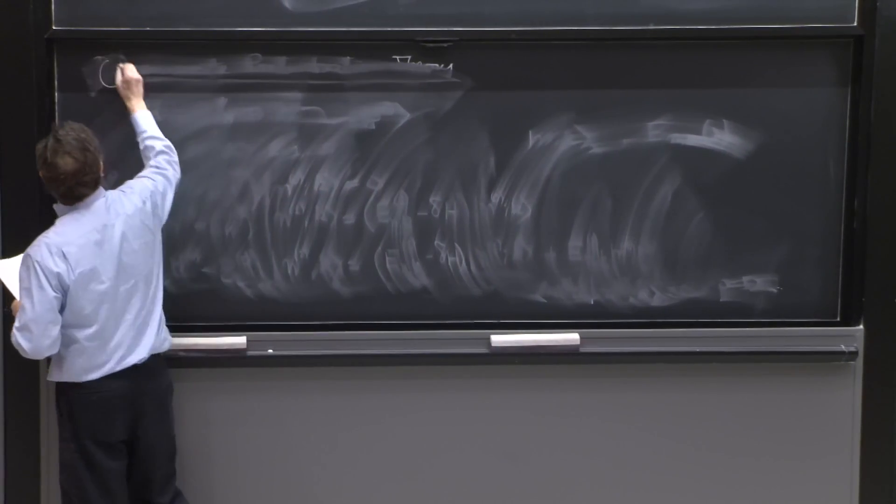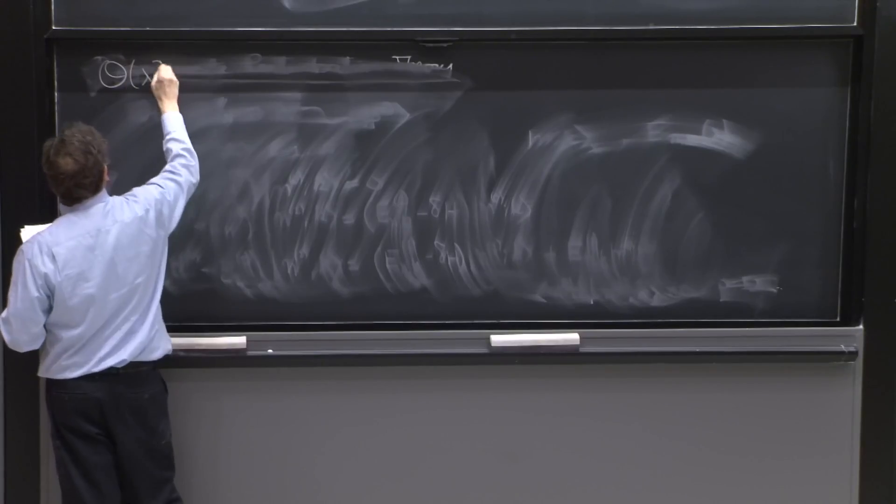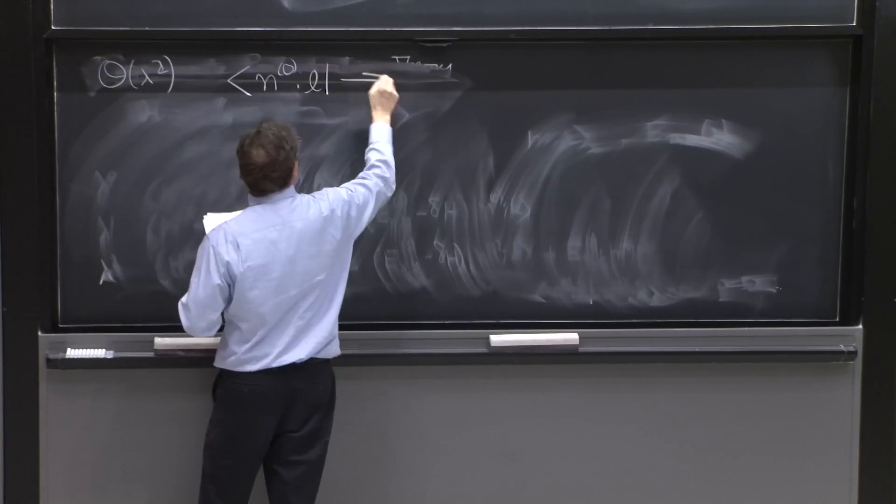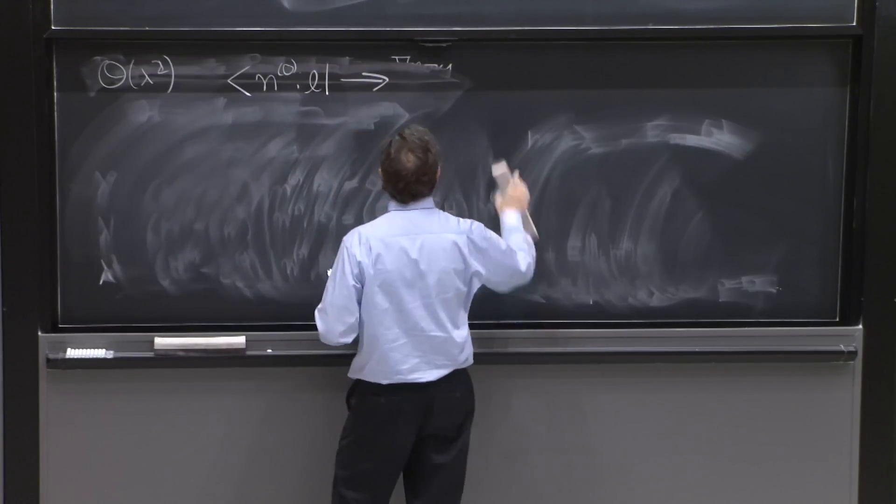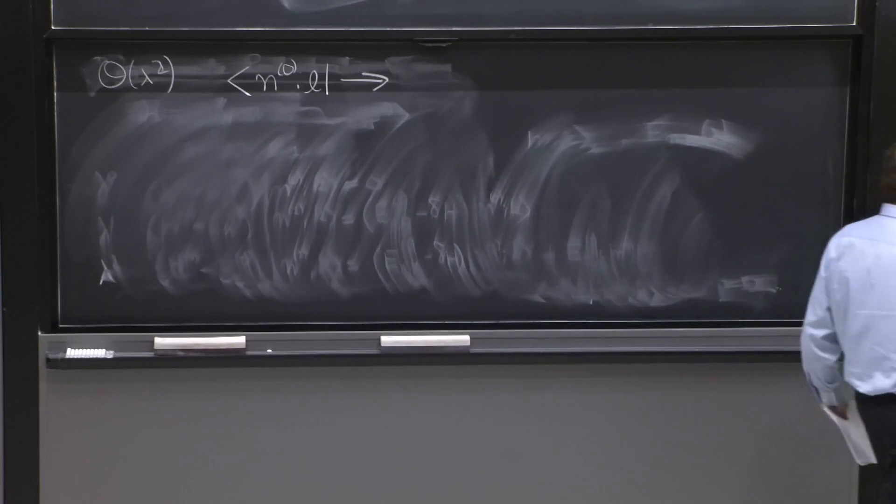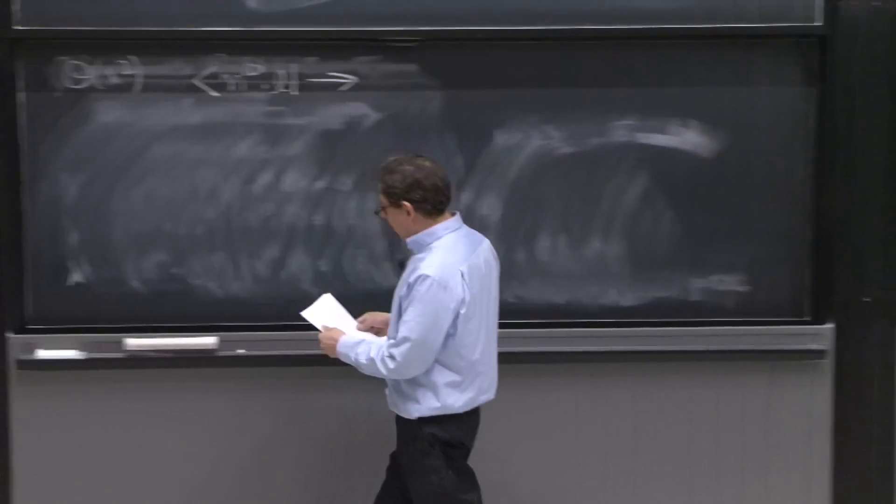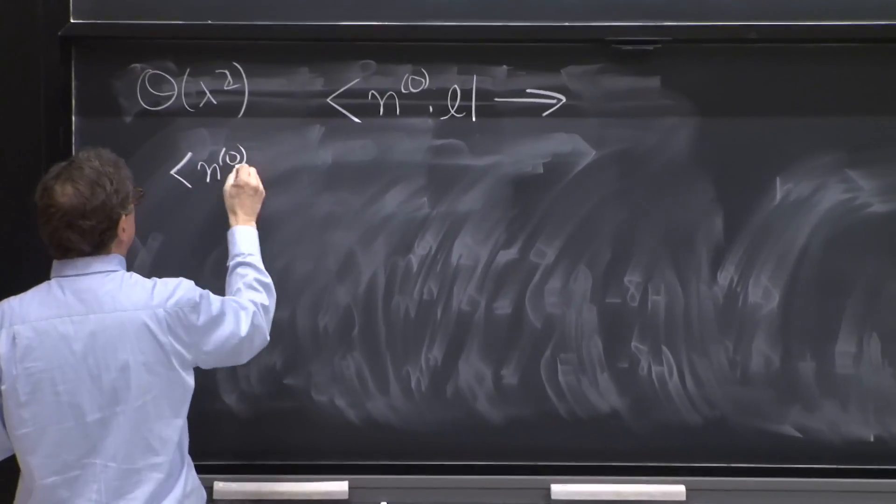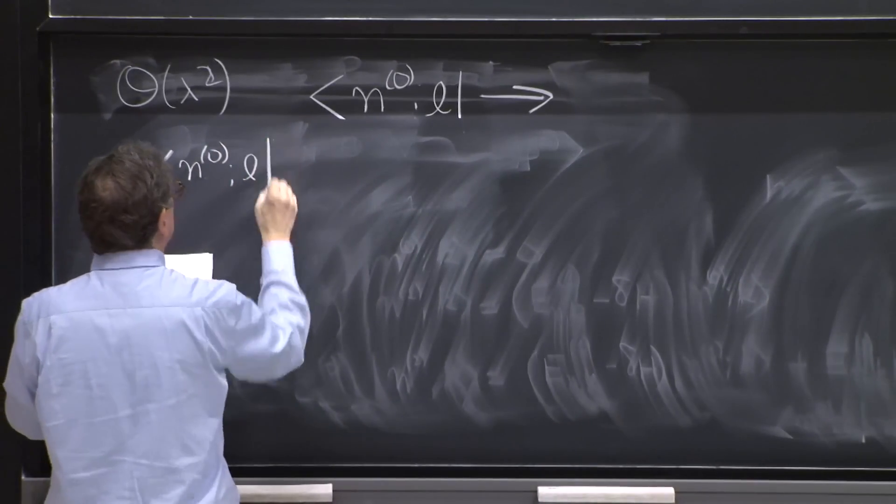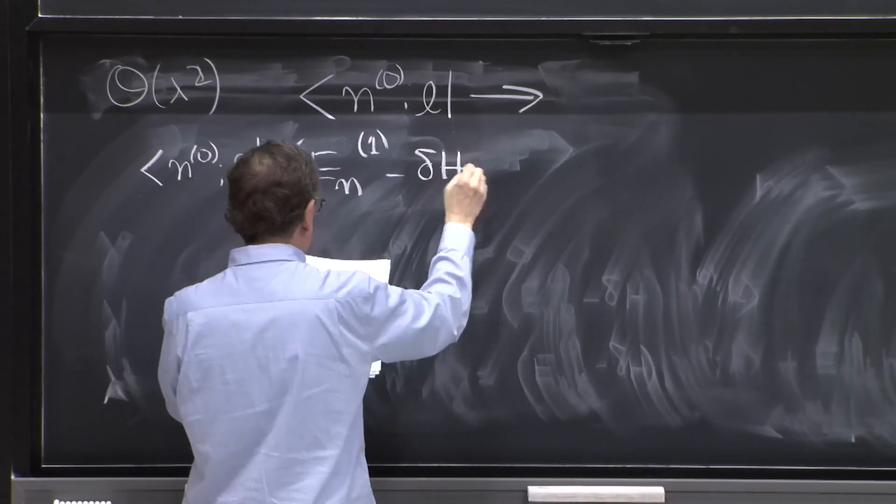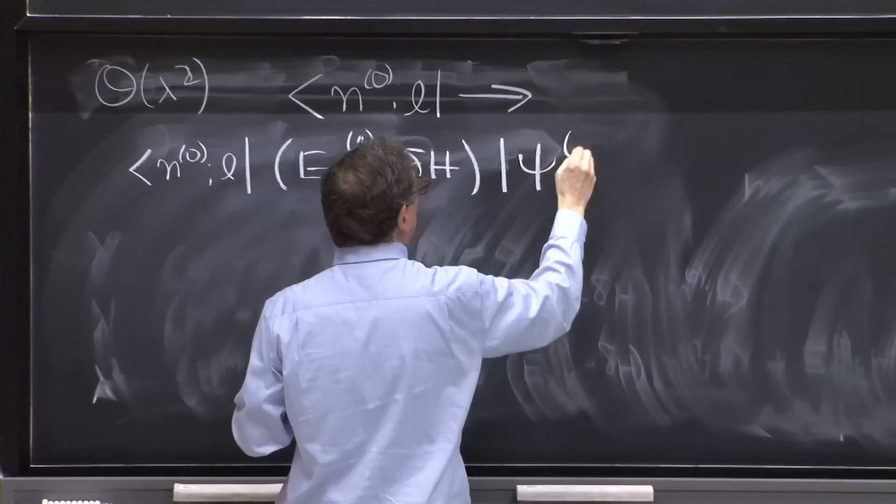So let's go to second order, order lambda squared, and we put n0 L states in. The left-hand side, happily, is zero. So we have n0 L from the right-hand side: E_n^1 minus delta H psi 1.